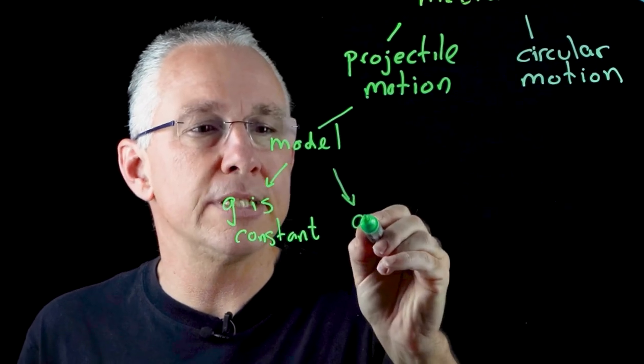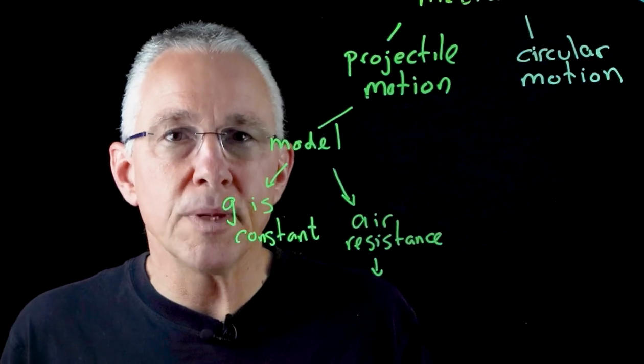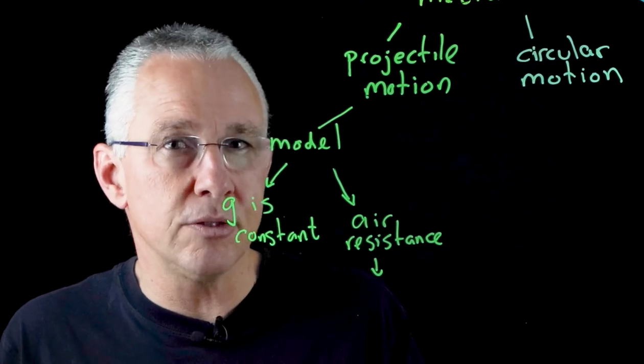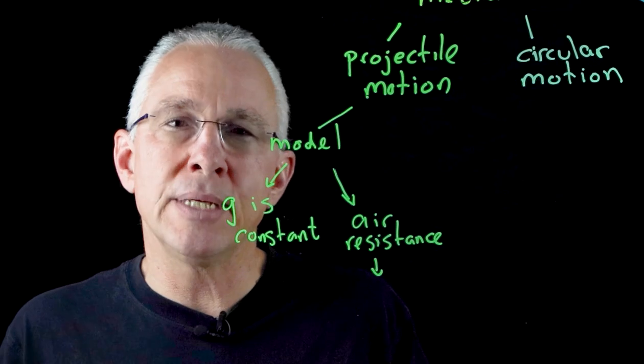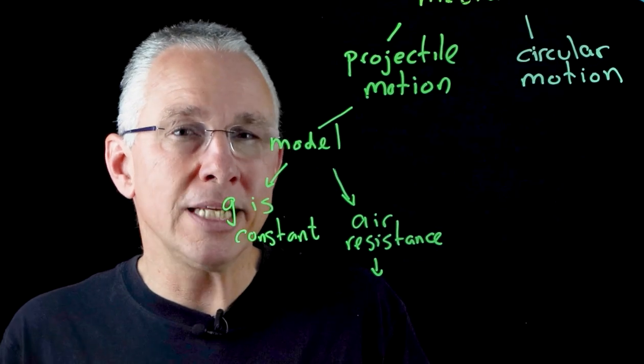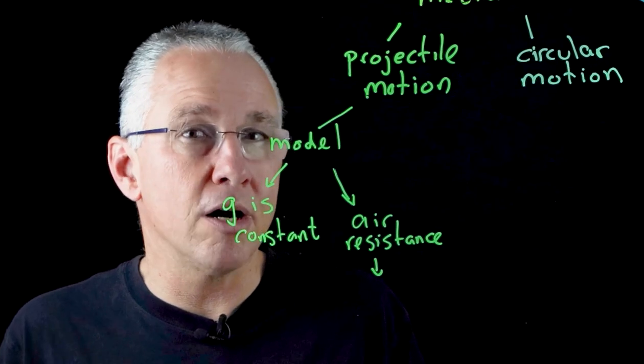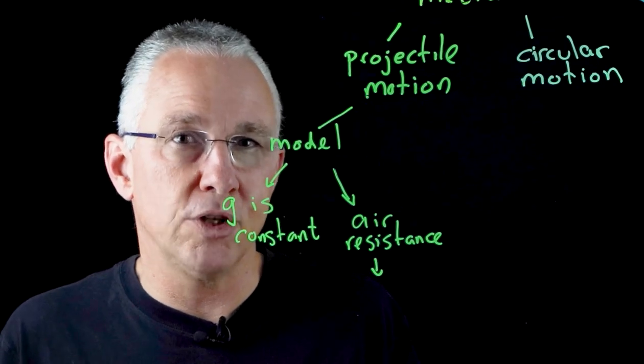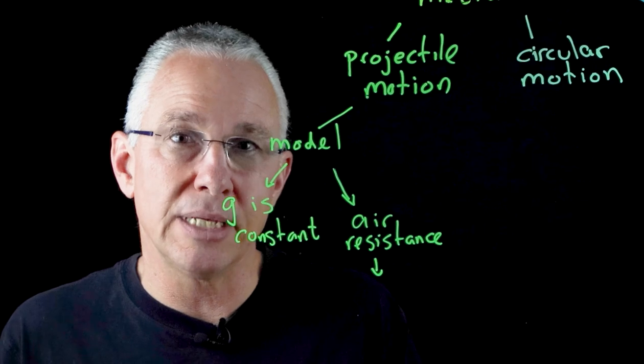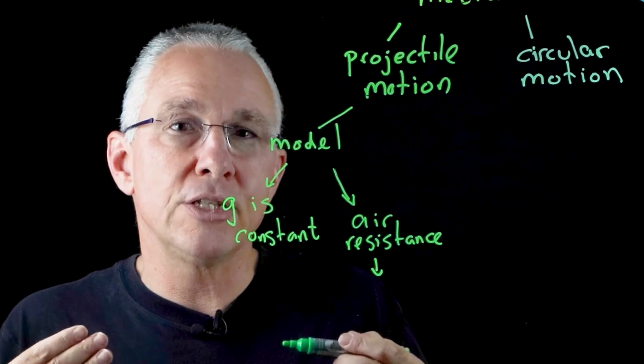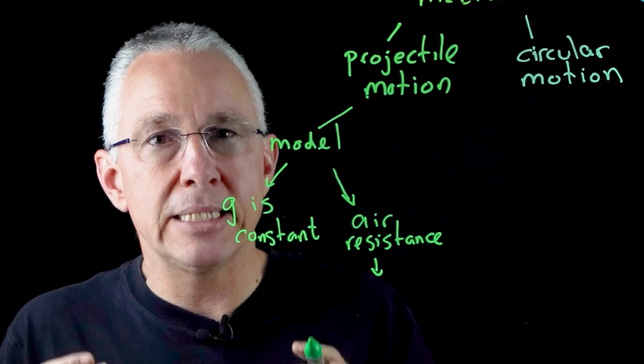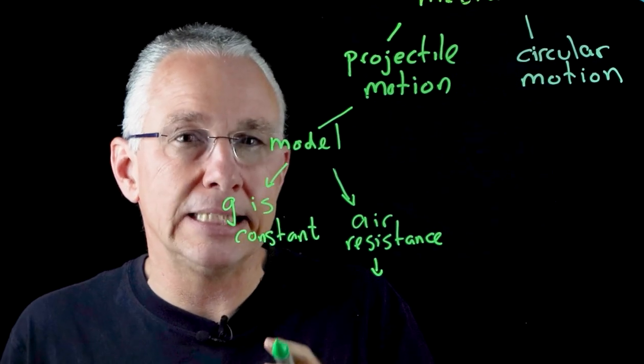The second aspect we assume is that air resistance is negligible. If we include air resistance in the analysis, it becomes much more difficult. Not only does air resistance apply a horizontal force on the object, it varies with the velocity of the object, so the mathematics becomes much more complex. By treating projectile motion by ignoring those two aspects, the mathematics becomes a lot simpler.